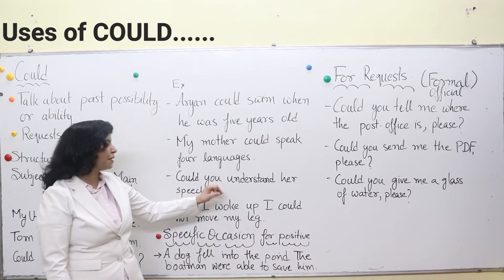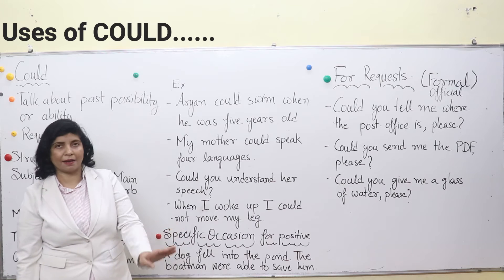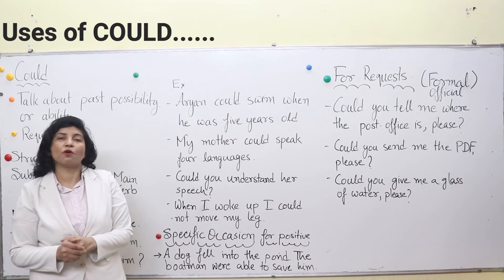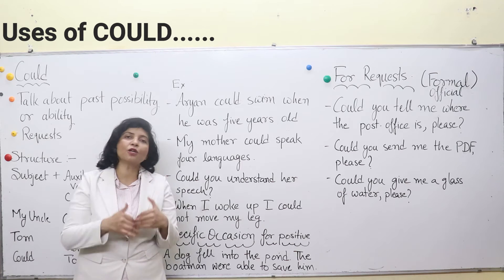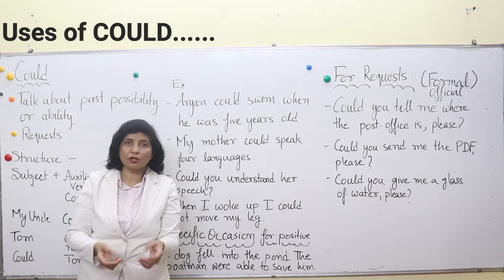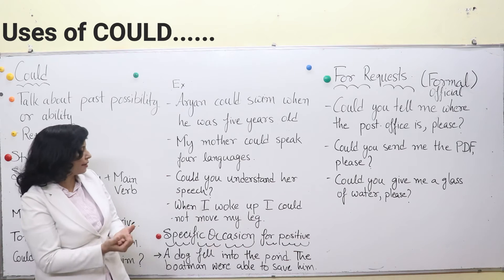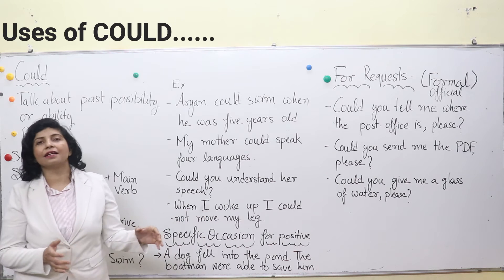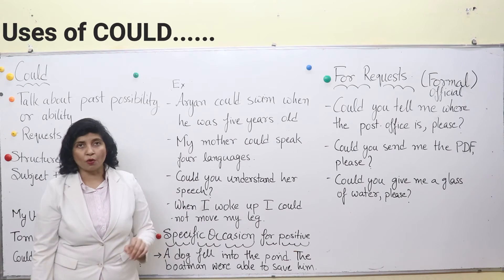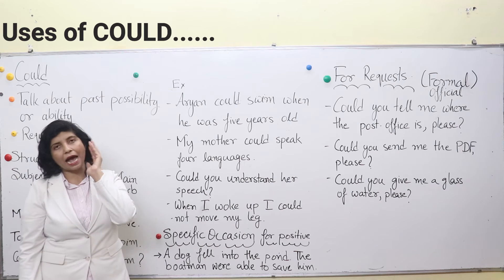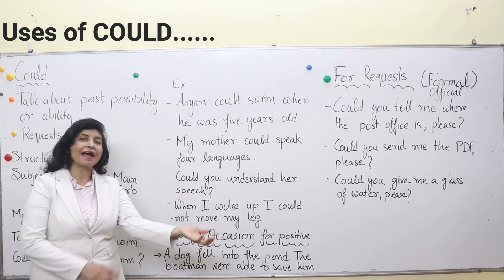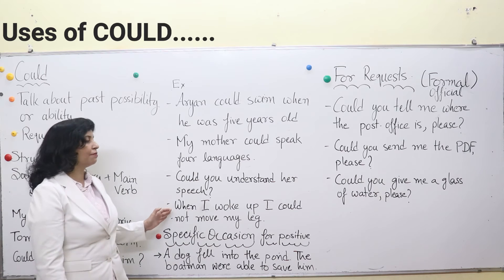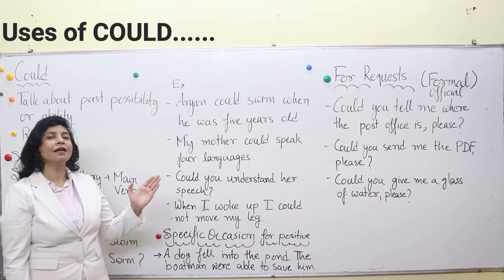Then: could you understand her speech? That means the speech has just finished — in the immediate past — and you are saying, could you understand? Could you decipher anything? Could you get anything from what she was saying? That means you were unable to understand, and you are asking someone: could you even understand her speech, what she was saying? Then: when I woke up I could not move my leg. When I slept I was okay, but when I woke up I could not move my head, I could not open my eyes, I could not feel my hand or my legs.